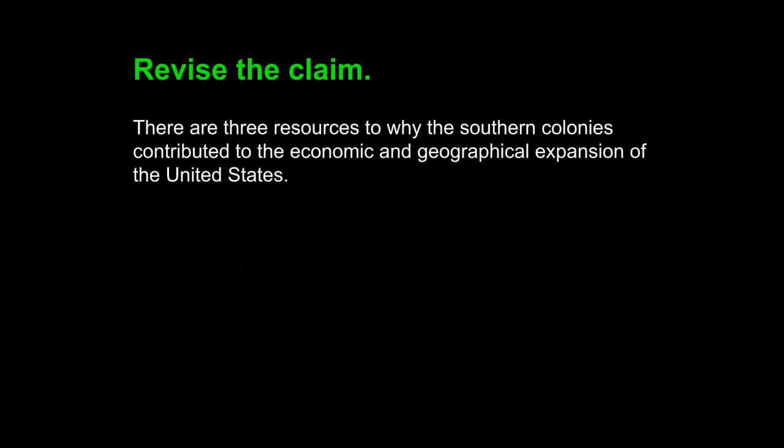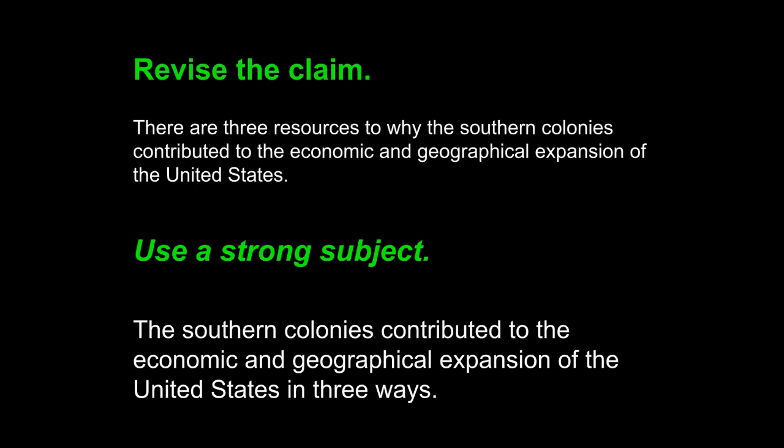However, this sentence does not flow well, primarily because when we revise it, we find it does not have a strong subject. The subject in this sentence is "there" — we need a better subject. We want to use acting subjects: a person, an organization, an institution — something that can do something. If we use "southern colonies," those are organizations, and that is a strong subject. Our revised claim states: "The southern colonies contributed to the economic and geographical expansion of the United States in three ways." The original sentence relies on "there," which is vague and leads to a weak verb, "are." Our new sentence uses a specific strong subject and a strong verb: "contributed."